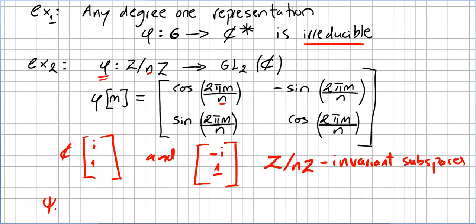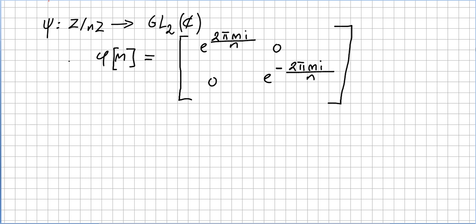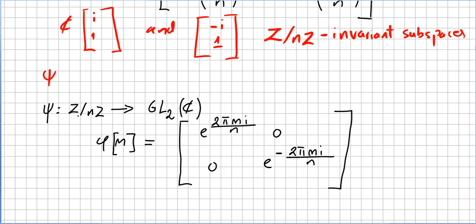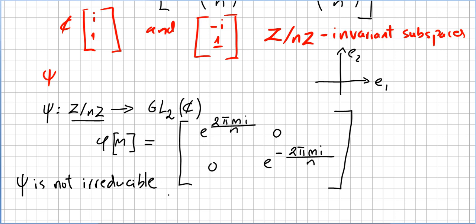There was phi and then there was psi. Psi was also a representation taking from ℤ/nℤ to the general linear group, given by a different matrix. The only invariant subspaces are not the trivial ones, because here, if you pick the coordinate axes, you can see they are invariant subspaces of psi. So psi is not irreducible — we have more invariant subspaces than the trivial ones.